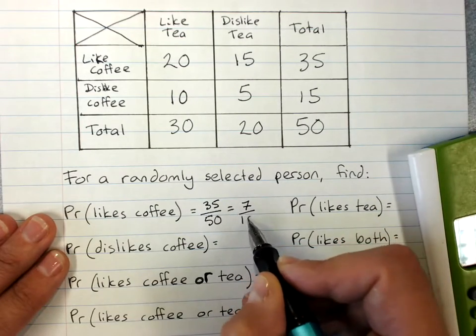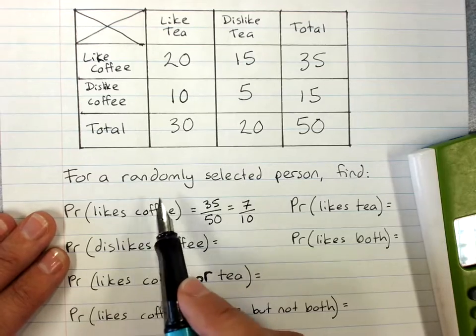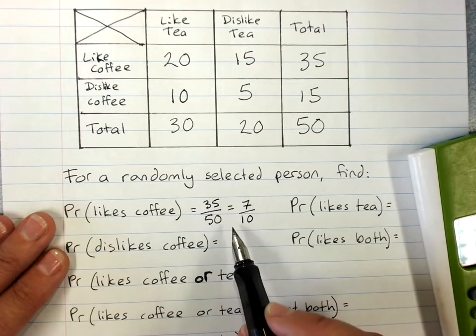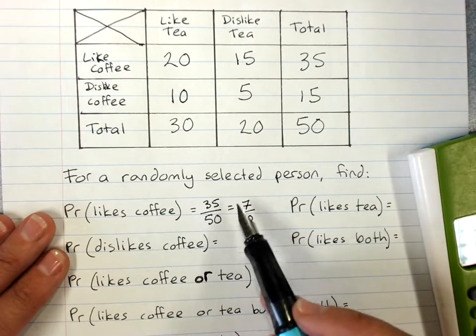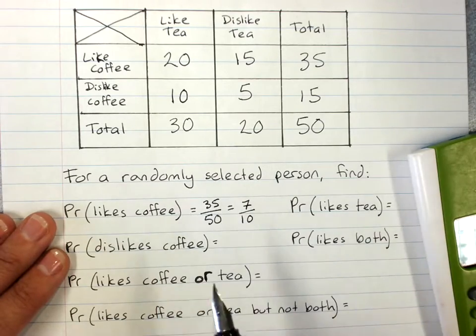So that says two things. It says that the probability that a random person likes coffee is 7 out of 10, and it also says that 7 tenths of the group likes coffee.